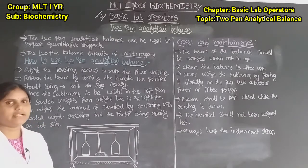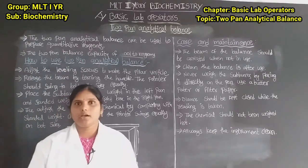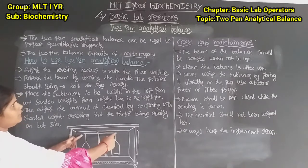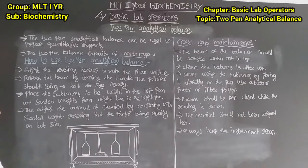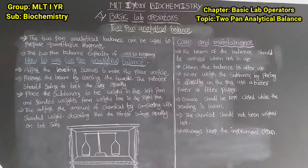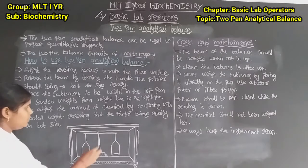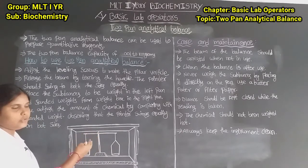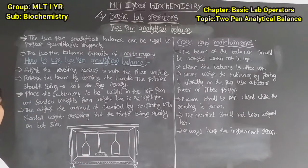How to use the two pan analytical balance. First, adjust the leveling screws to make the pillar vertical. Release the beam by turning the handle. The pointer should swing to both sides equally.